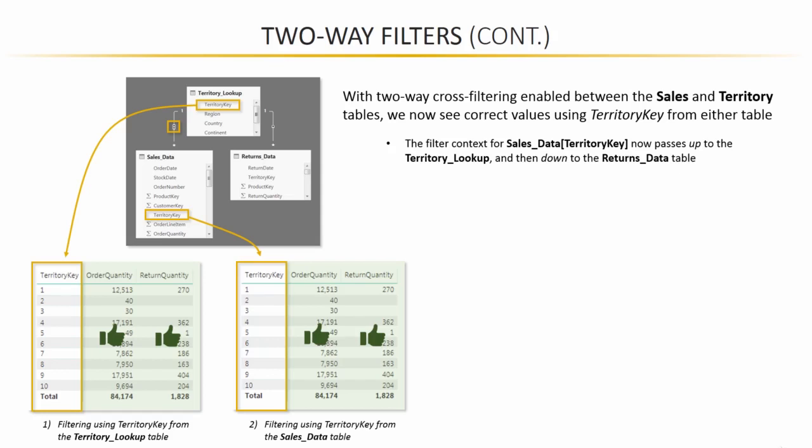And because we've enabled cross-filtering between those two tables, we can now see correct values using the territory key field from either one of those tables. So, just like before, using the territory key from the lookup will yield proper, accurate values for both order quantity and returns quantity.